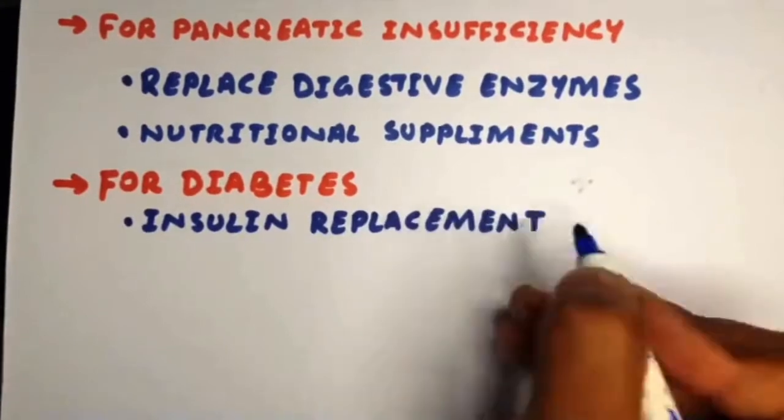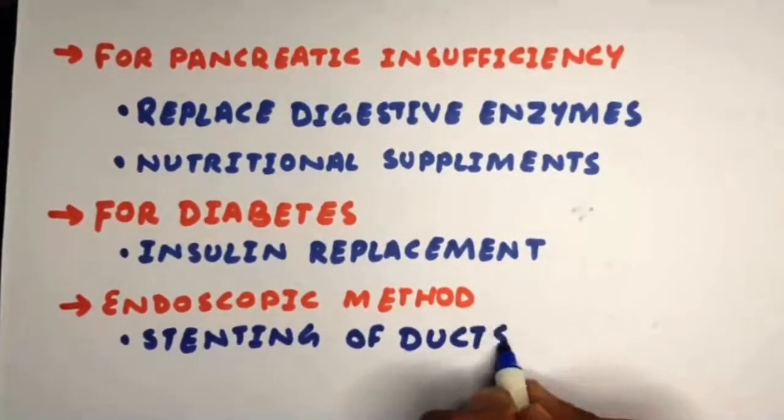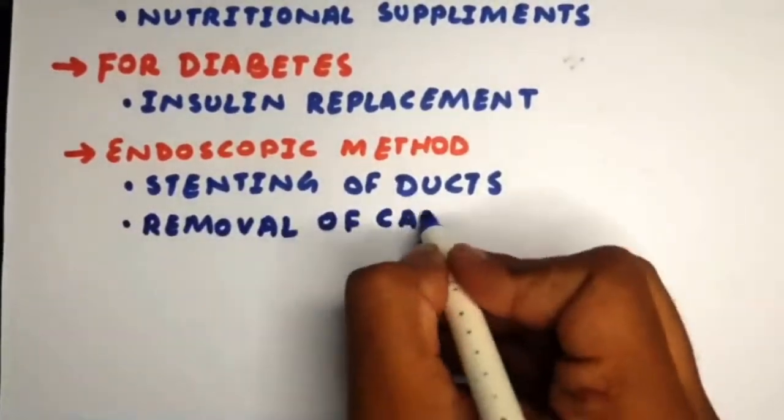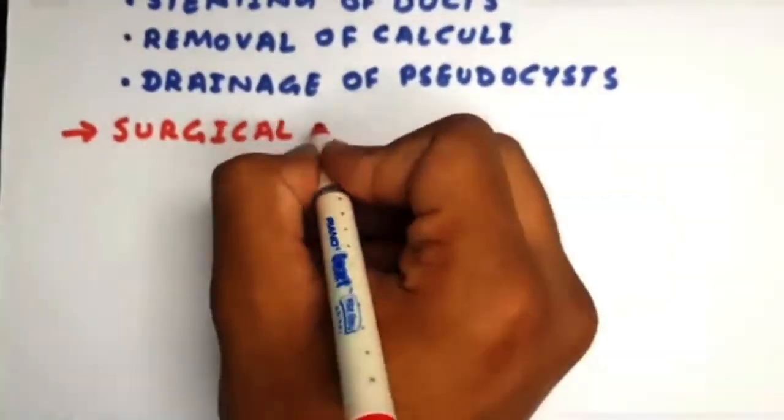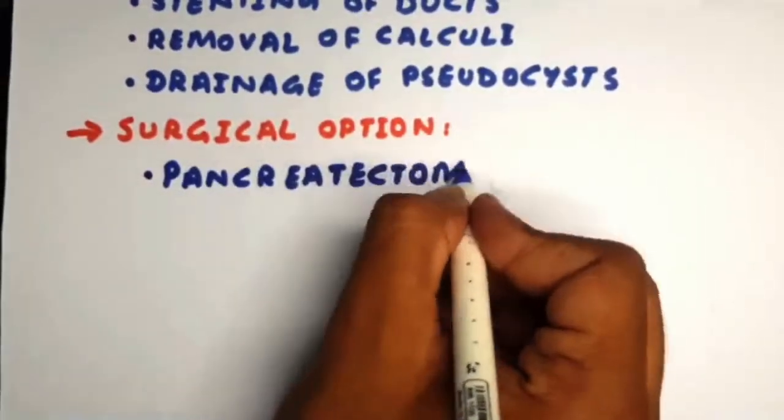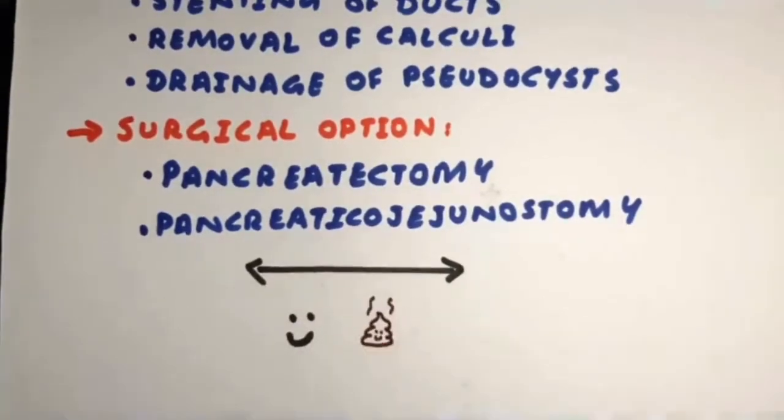We have endoscopic methods to relieve symptoms through stenting of ducts, removal of calculi, and drainage of pseudocysts. Surgical options include pancreatectomy or pancreaticojejunostomy, which provides permanent drainage of pseudocysts.